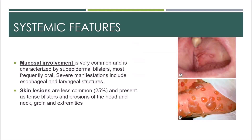Systemic features include mucosal involvement and skin lesions. Mucosal involvement is very common and is characterized by subepidermal blisters, most frequently oral. Severe manifestations include esophageal and laryngeal strictures. Skin lesions are less common, occurring in about 25% of patients, and present as tense blisters and erosions of the head, neck, groin, and extremities.